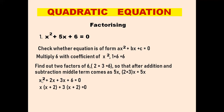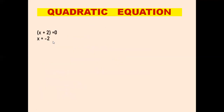Now we take common. x is common in the first two terms, giving x(x plus 2), and 3 is common in the last two terms, giving 3(x plus 2). So we get x(x plus 2) plus 3(x plus 2) equals 0. We can see x plus 2 is common to both, so we write (x plus 2)(x plus 3) equals 0. Therefore either x plus 2 equals 0, giving x equals minus 2, or x plus 3 equals 0, giving x equals minus 3.